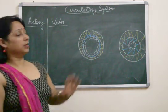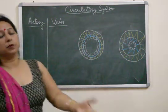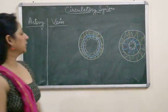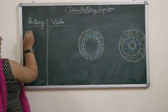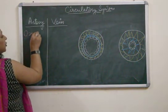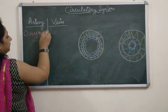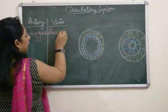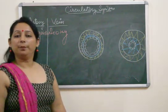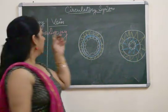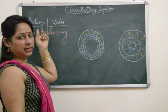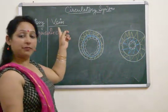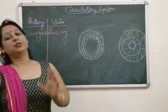Starting with arteries and veins, first the functional difference, which almost all of you must be knowing: arteries carry oxygenated blood and veins carry deoxygenated blood. There is an exception — the pulmonary artery is the only artery which carries deoxygenated blood, whereas the pulmonary vein is the only vein which carries oxygenated blood.